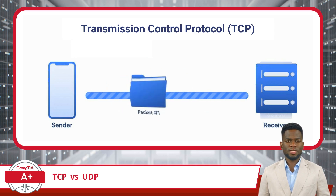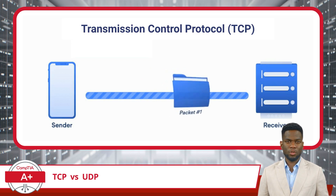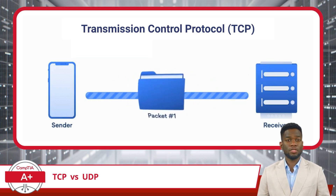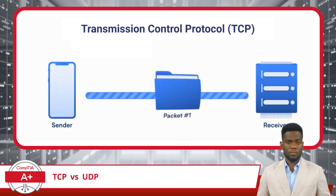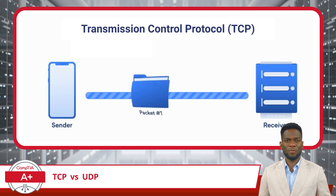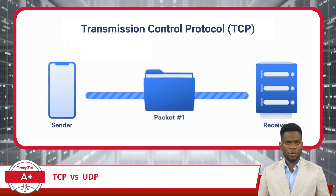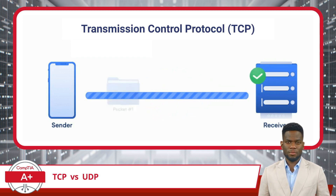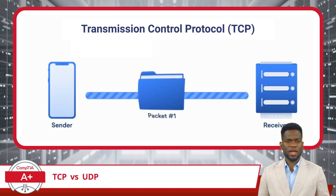When a device sends information using TCP, it establishes a connection with the recipient using a process referred to as a three-way handshake. This connection process is just like a phone call — you want to make sure the other person is on the line before you start talking. Once the connection is established, TCP checks whether all data packets are received and in the right order. If something is missing, the protocol is designed to request a resend. This check process ensures complete data integrity and guarantees data delivery.